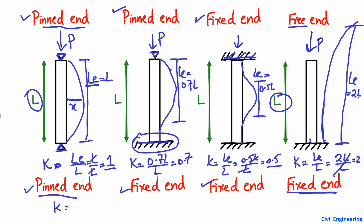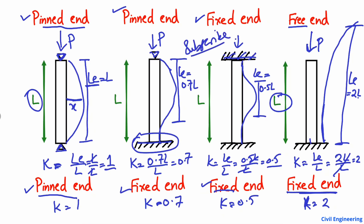So to summarize: for a pin-pin column K equals 1; for a fixed-pin column K equals 0.7; for a fixed-fixed column K equals 0.5; and for a fixed-free column K equals 2. For different end support conditions of columns, we have different K constants that define the effective length of the column. Hope you guys understand today's topic — don't forget to subscribe to our channel. Thank you for watching.